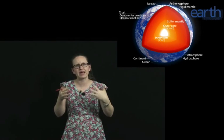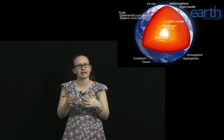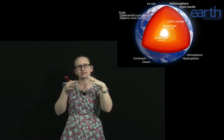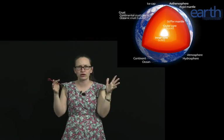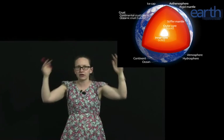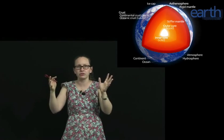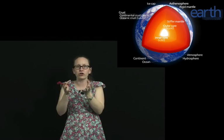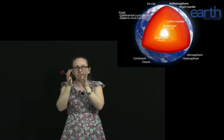So in order to understand why the Earth has a magnetic field, we first need to understand a little bit about the structure of the Earth. So the Earth has a crust, then a mantle, then an outer core which is fairly molten, and an inner core.